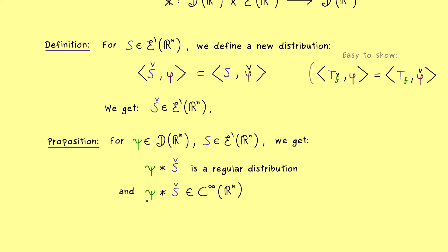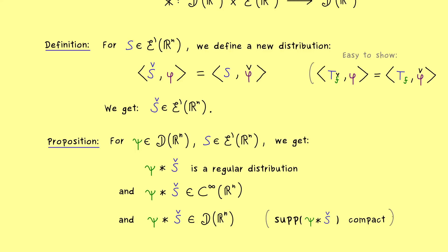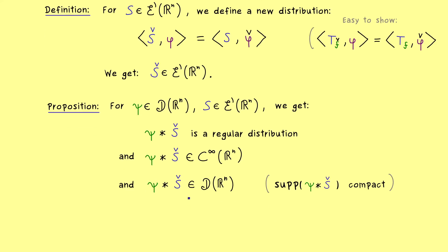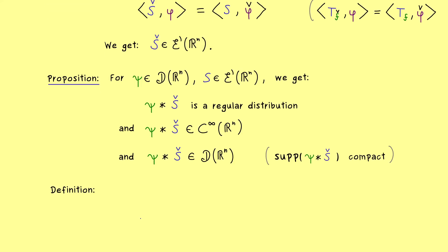This is true for any distribution on the right hand side; however, in this case we even have a distribution with compact support, which means the resulting function also has compact support. Therefore, our final result is that this convolution gives us a test function again. This special convolution gives us a function with compact support, and one can show this using the definition of the support for distributions. I will skip the detailed calculations here, because I want to focus on this important result: we can define the convolution for two distributions by pushing the star to the right hand side.